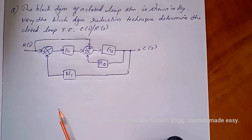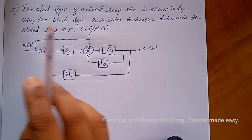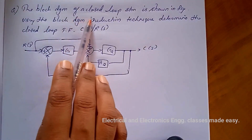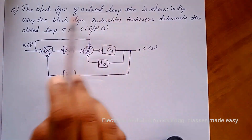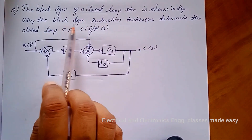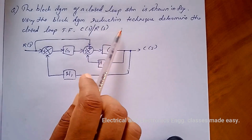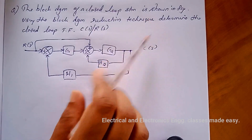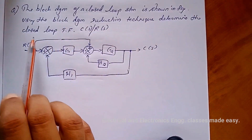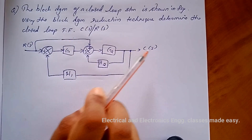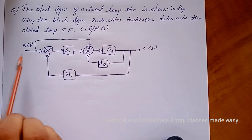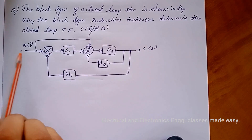Let us do another example. The block diagram of a closed loop system is shown in the figure. Using the block diagram reduction technique, determine the closed loop transfer function C(s) divided by R(s).